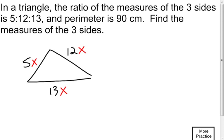If those are really all of my side lengths, and the perimeter is 90 centimeters, then to calculate perimeter, I need to add all my sides together. I'm going to take 5x, 12x, and 13x. If I add them all together, it's going to equal the actual perimeter, which is 90.